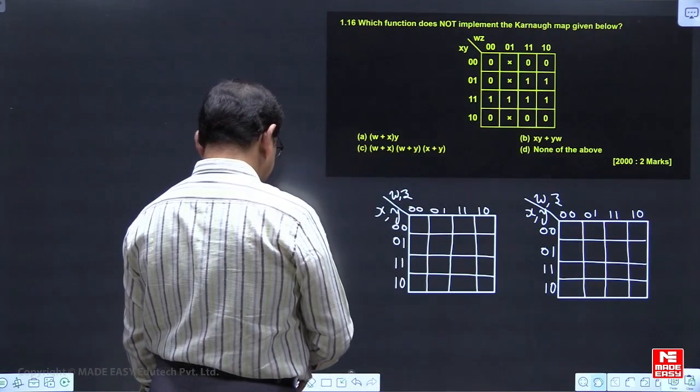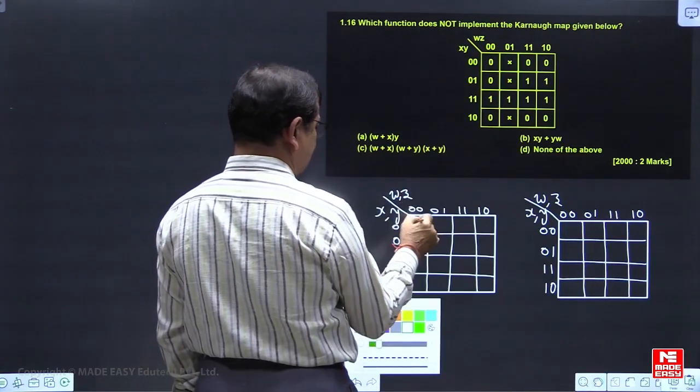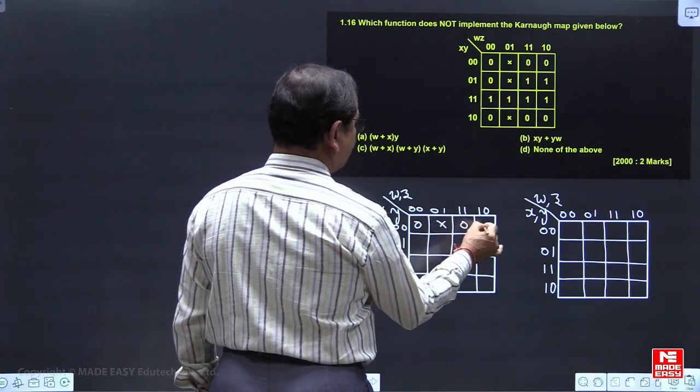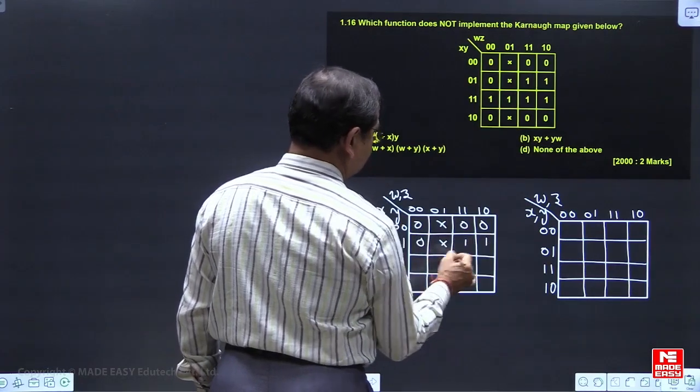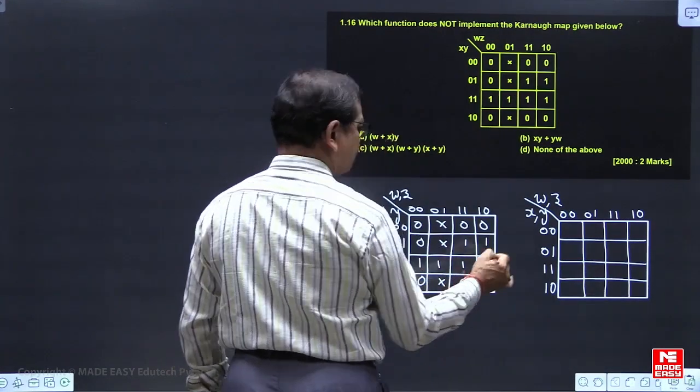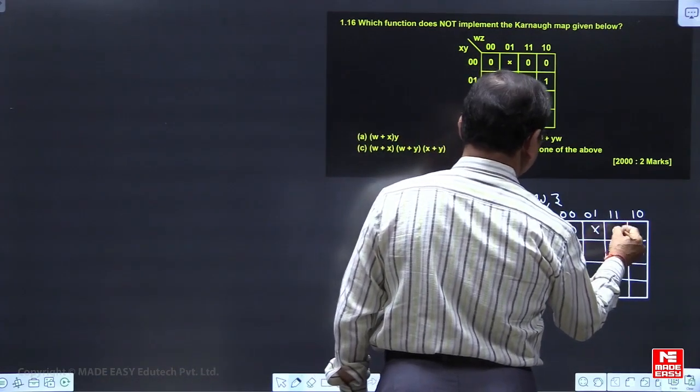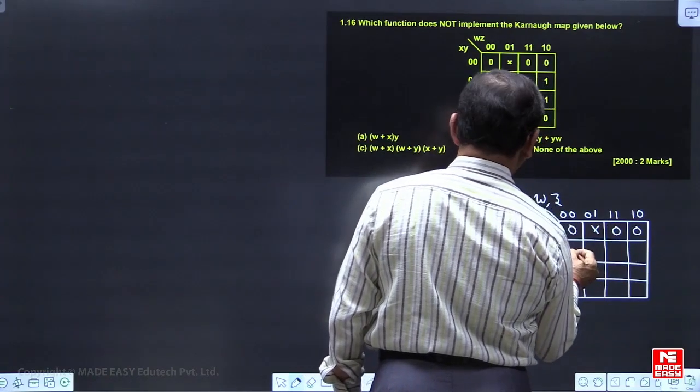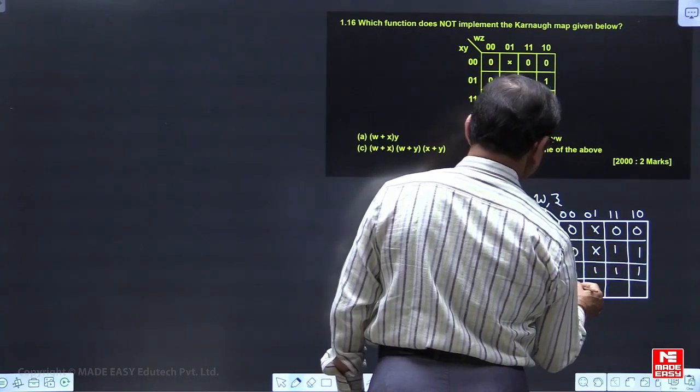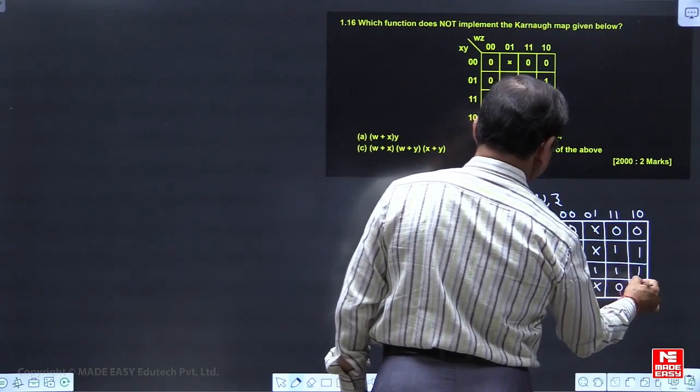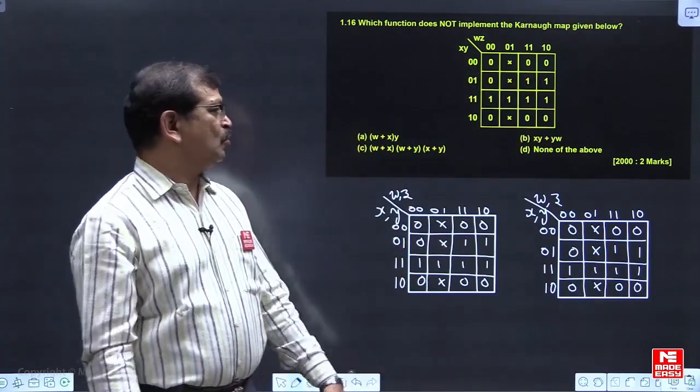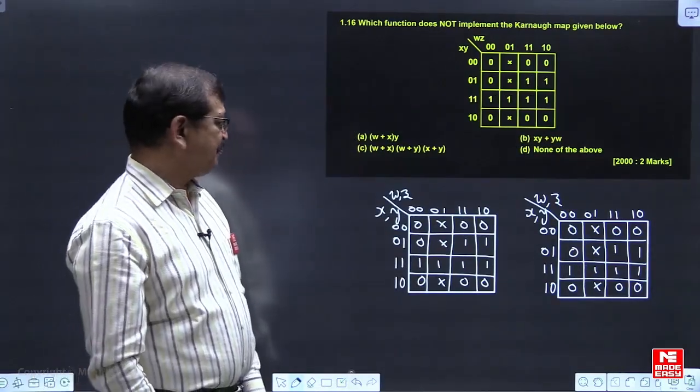In the K-map, you can see, for our convenient work purpose, I am here developing separately. So wherever we are having 0, it is a maxterm. Wherever we are having 1, it is a minterm. All this knowledge you are familiar. Wherever you are having crossmark, crossmark is indicating don't care.